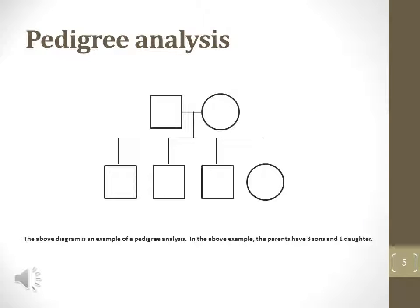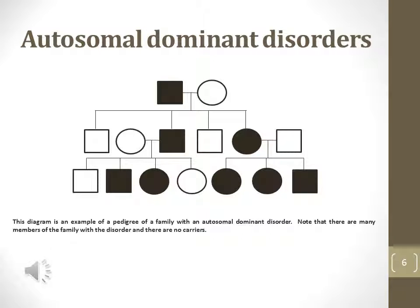This is an example of a pedigree where two non-carrier parents have three males and one female. This pedigree depicts the pattern of inheritance of an autosomal dominant genetic disorder. Notice the parents of all affected individuals had at least one parent that expressed the trait. Autosomal dominant genetic disorders cannot skip generations.